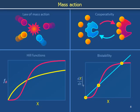We will now use the law of mass action we derived in the previous video to calculate the bound fraction of enzymes in a system exhibiting cooperativity. In this way, we will derive Hill functions.